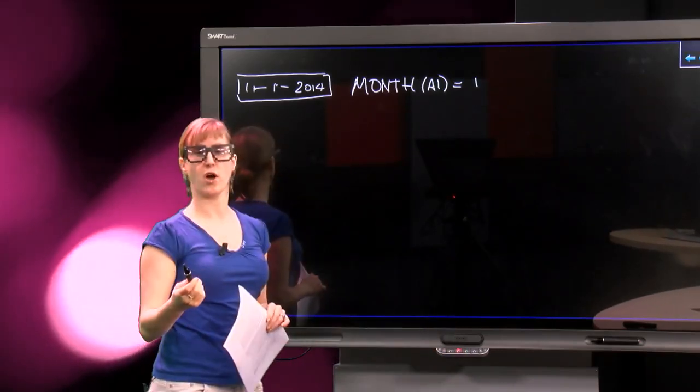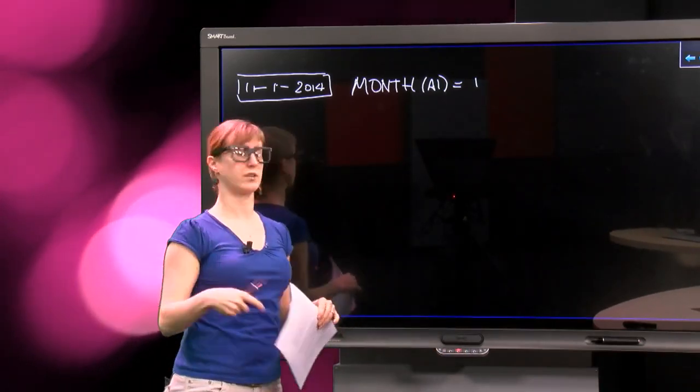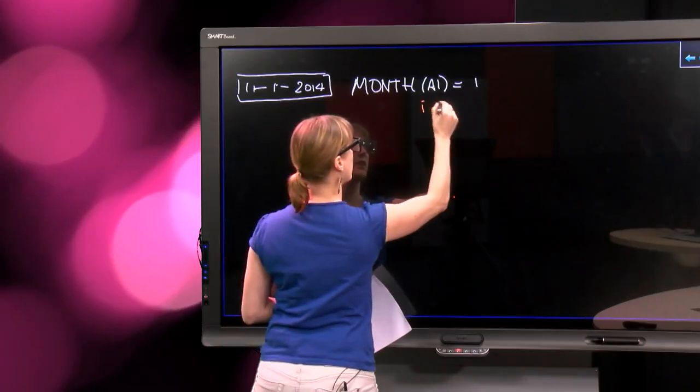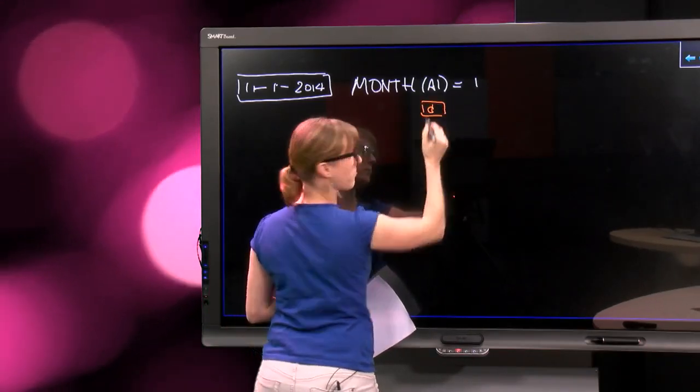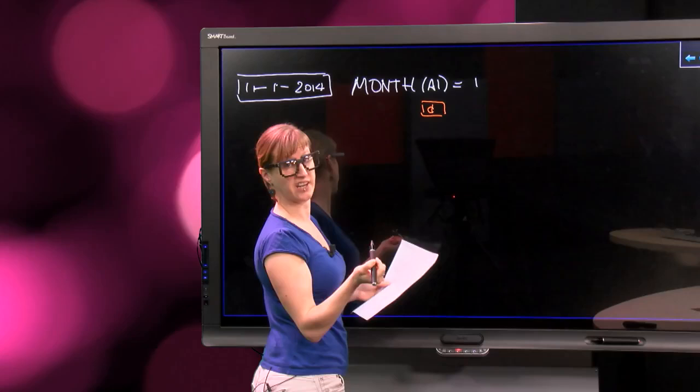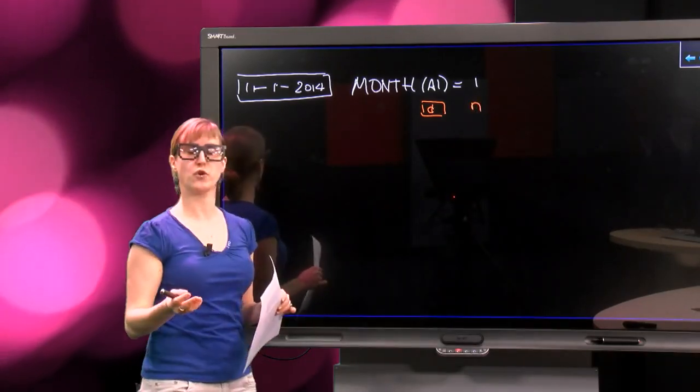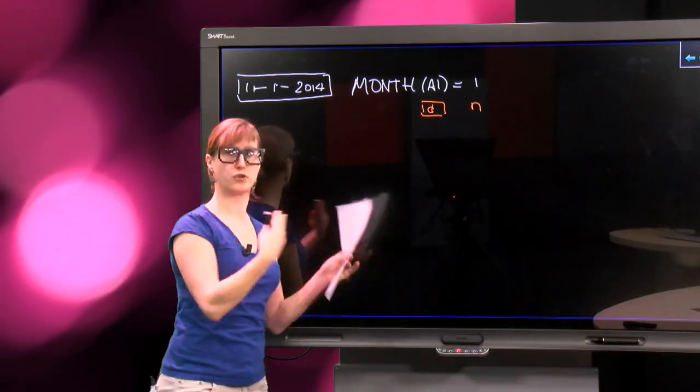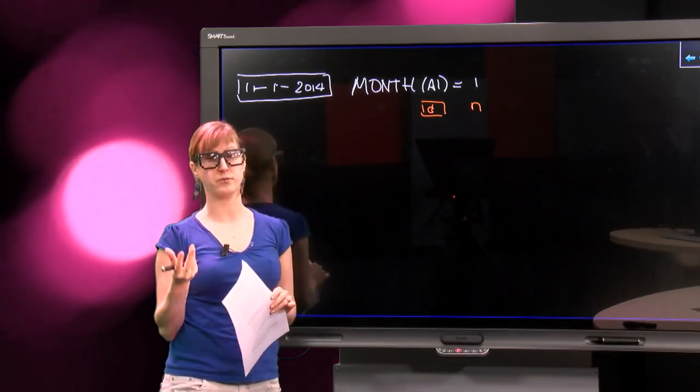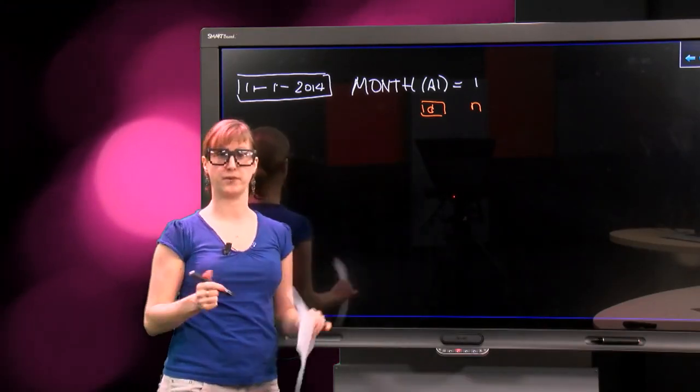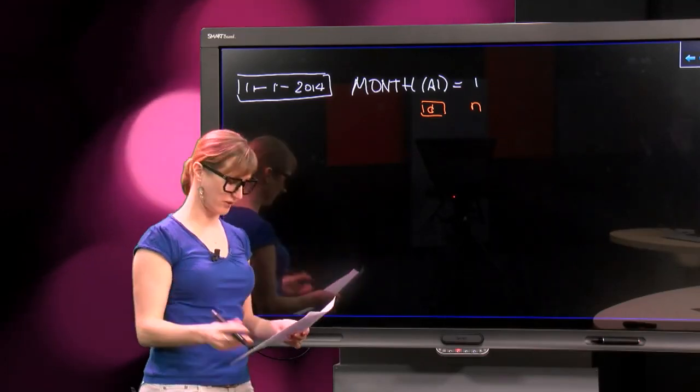So here you see an example of something that takes in a certain value, it takes in a container, something that contains a cell containing a date, but it results in a number. So there you take in a date, but you return a number. So sometimes the types of the input are different from the types of the output, they don't necessarily have to match.